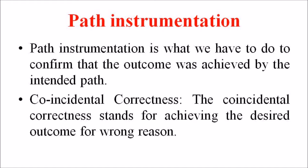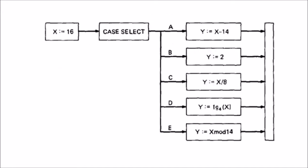Coincidental correctness stands for achieving the desired outcome for a wrong reason. This figure is an example of a routine that for the chosen input value x equals 16 yields the same outcome y equals 2 no matter which case we select. Therefore, the test chosen this way will not tell us whether we have achieved the coverage. For example, the five cases could be totally jumbled and still the outcome would be the same.